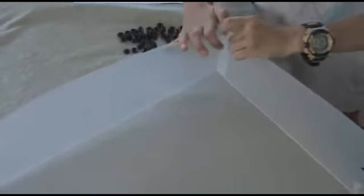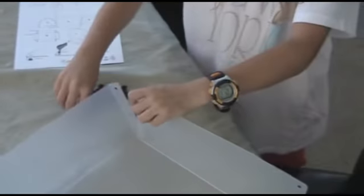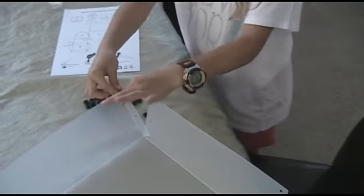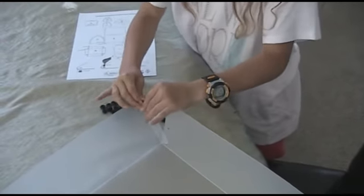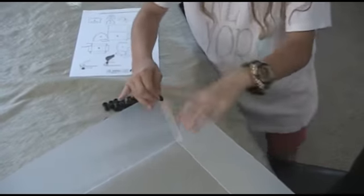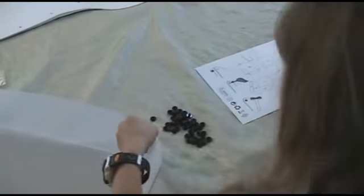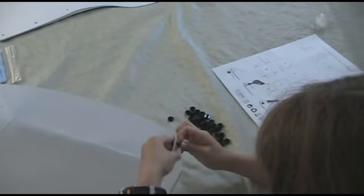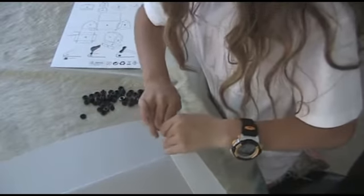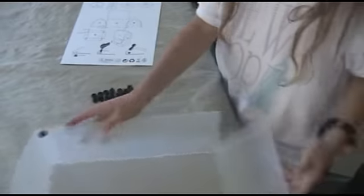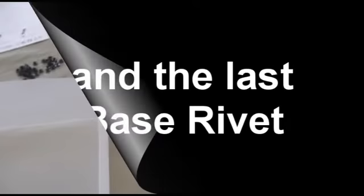Now to the next rivet. Again, start and insert the female rivet part from the inside. Use the male part to fasten it by inserting it from the outside. Continue on until we are finished with the last rivet.